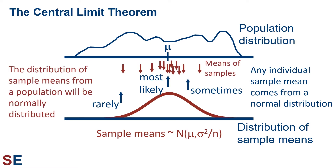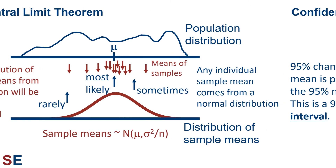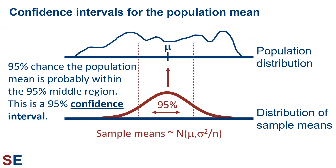How close the sample mean is to the population mean is influenced by the variance in the population and the sample size. We can use the Central Limit Theorem to estimate where the population mean probably is by thinking about the normal distribution of our sample means. The distribution of those sample means is centered around the population mean, and the middle 95% of that distribution is what we would expect to see 95% of the time. We can start with the mean of one sample and use our knowledge of the width of the distribution of sample means to create a window around that sample mean that will probably include the population mean.